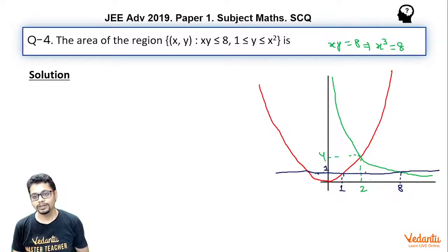So the region that we want is essentially this. How? Because this is above y = 1, so y ≥ 1. Here x² ≥ y, and also xy ≤ 8.